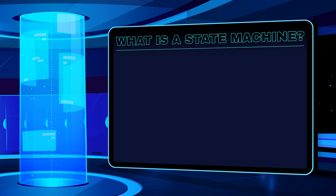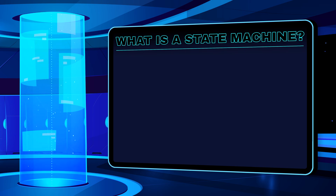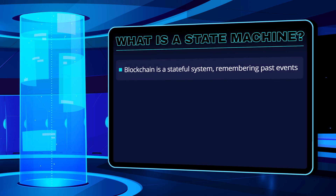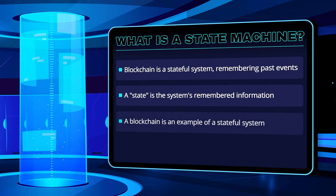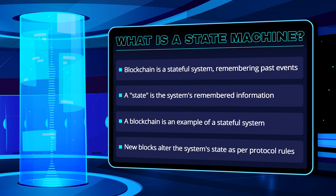Before we get into the different balance models, it makes sense to take a step back and look at the blockchain in more general terms, as a state machine. Any system is called stateful when it remembers past events or interactions by its users. This remembered information is called the system's state. A blockchain is an example of a stateful system. When a new block is added, the system changes based on rules defined in its protocol.